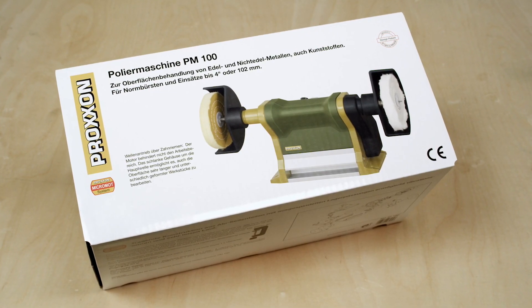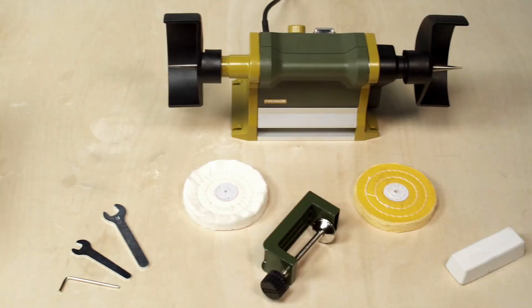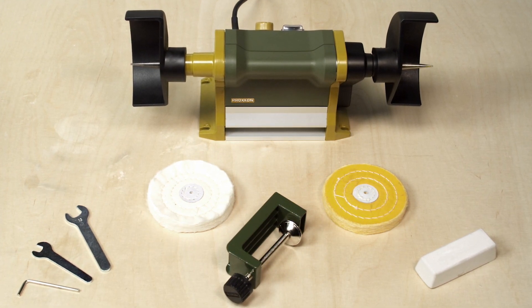The PM100 includes as standard two polishing wheels and one universal polishing compound bar.